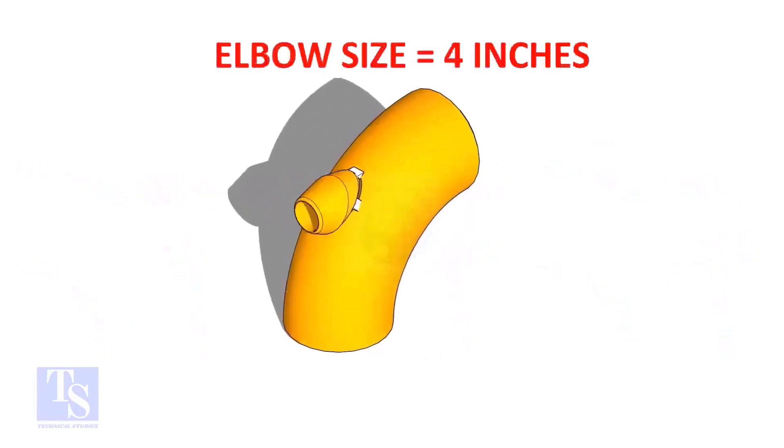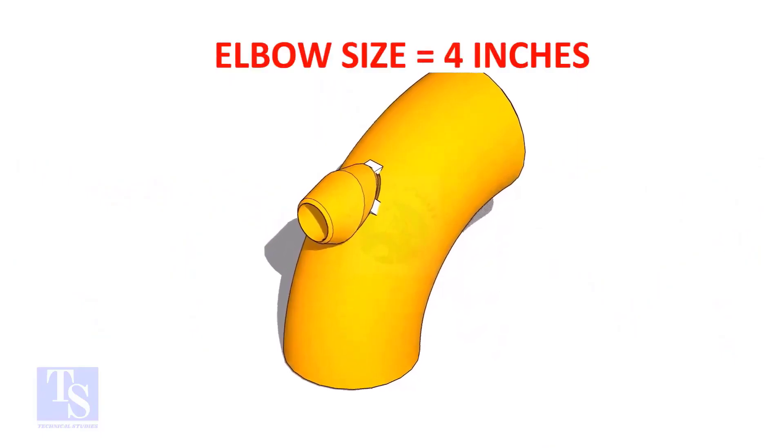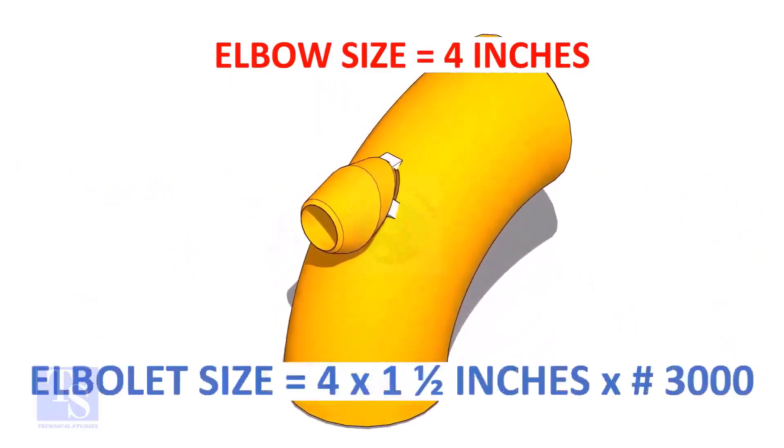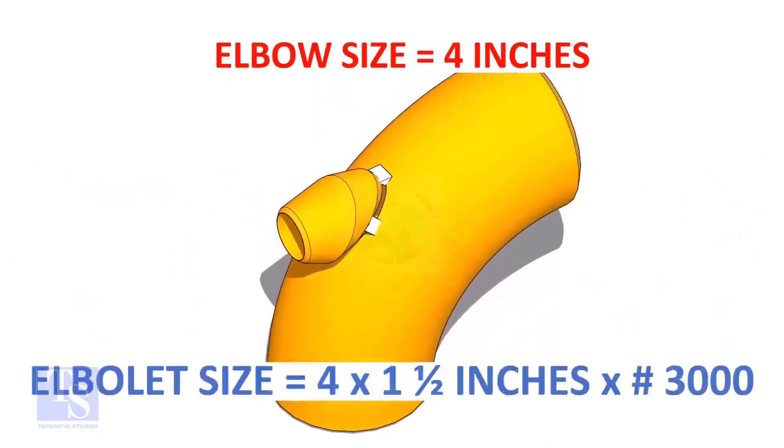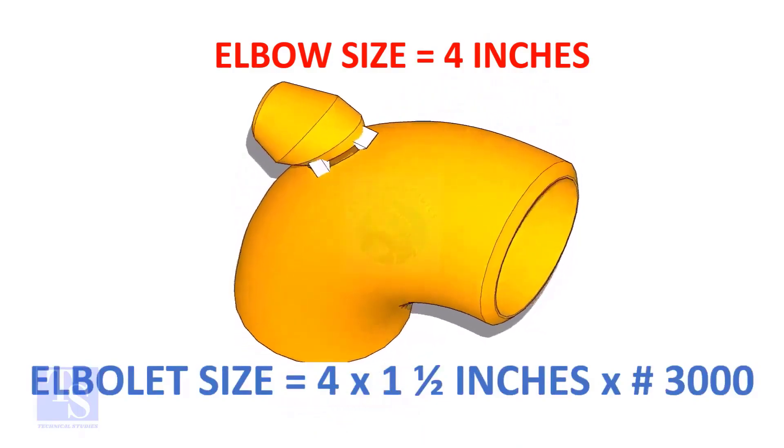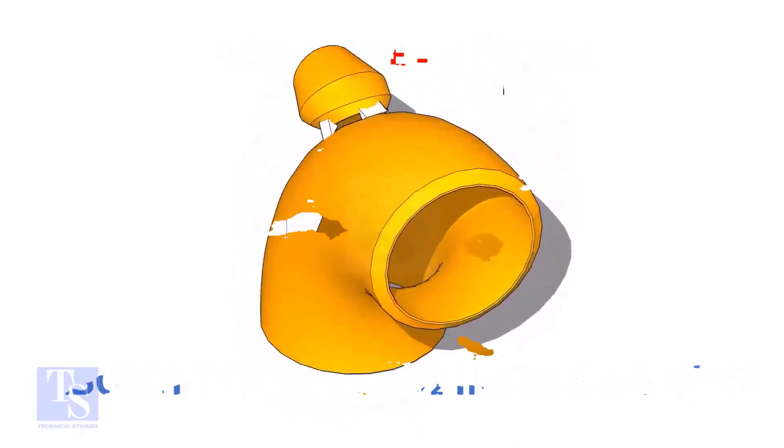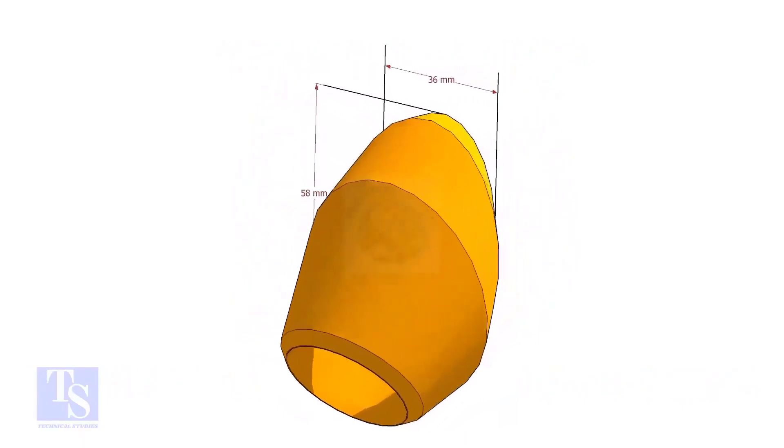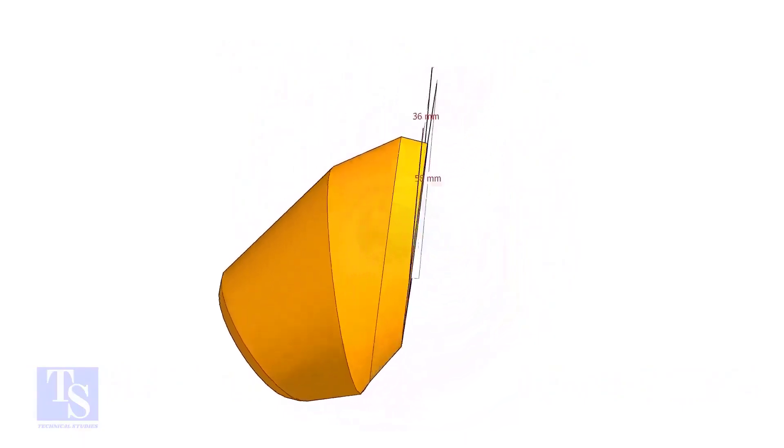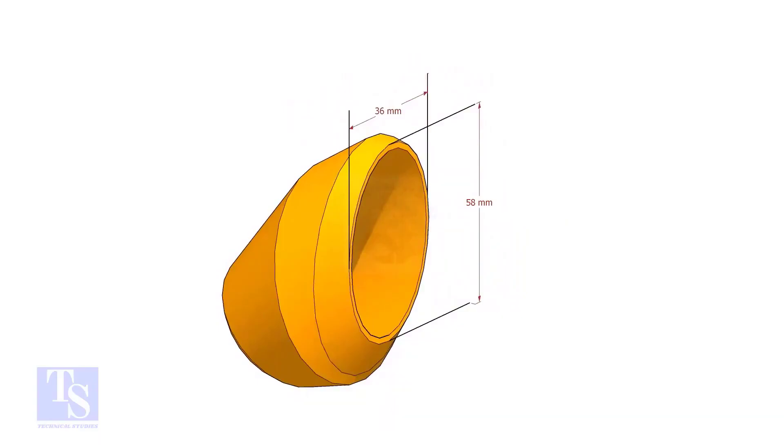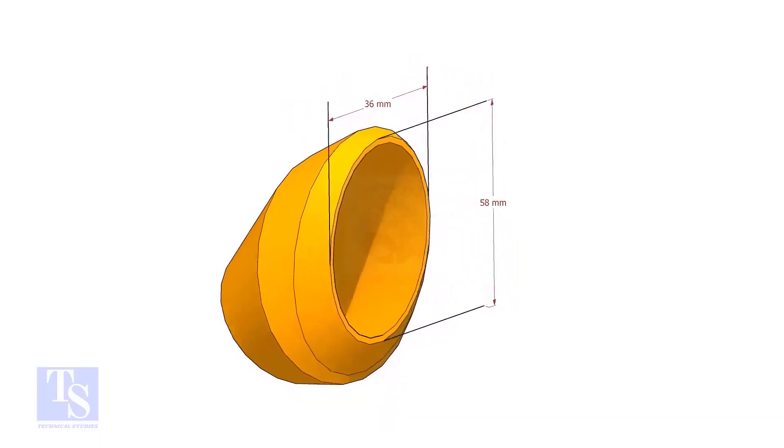The size of our elbow is four inch, and the size and rating of the elbowlet is one and a half inch and three thousand pounds respectively. The bottom opening size of the elbowlet is 36mm into 58mm. Please note down these dimensions.